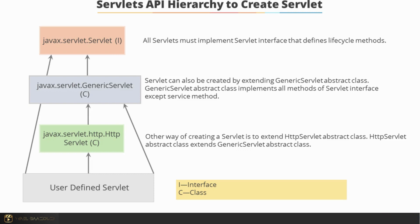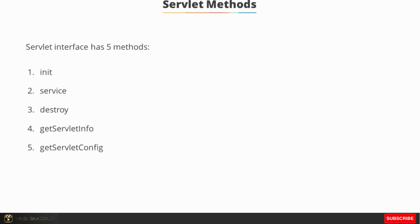All servlets must implement the servlet interface, which defines lifecycle methods. A servlet can also be created by extending the GenericServlet abstract class, which implements all methods of the servlet interface except the service method. Another way to create a servlet is to extend the HttpServlet abstract class, which in turn extends GenericServlet. The servlet interface has five methods: init, service, destroy, getServletInfo, and getServletConfig.